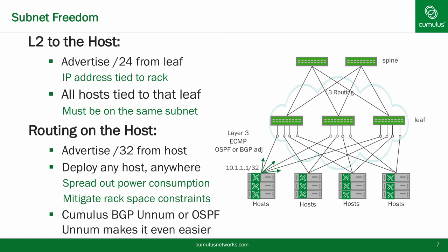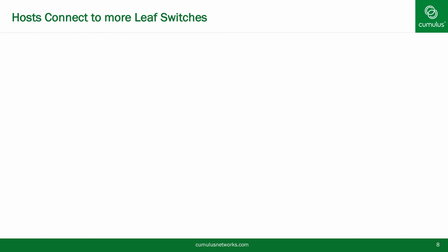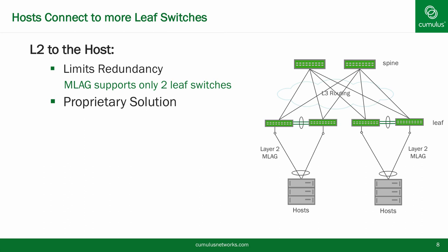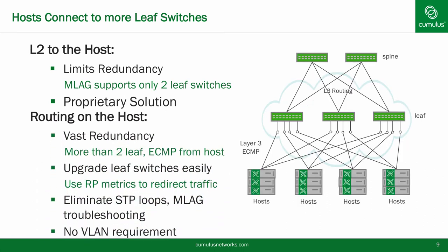No configuration change to move. With some vendors, running Layer 2 to the host creates the restriction of connecting the host to only two leaf switches if running MLAG. This restriction could cause a loss of 50% of the bandwidth during a leaf outage. Additionally, MLAG ties up two additional ports for intra-MLAG communication that could otherwise be used for the data plane. However, running routing on the host allows you to connect the host to as many leaf switches as you wish, thereby decreasing the outage bandwidth during a failure. For example, with four leaf switches, you would lose only a quarter of the bandwidth during a leaf switch outage.